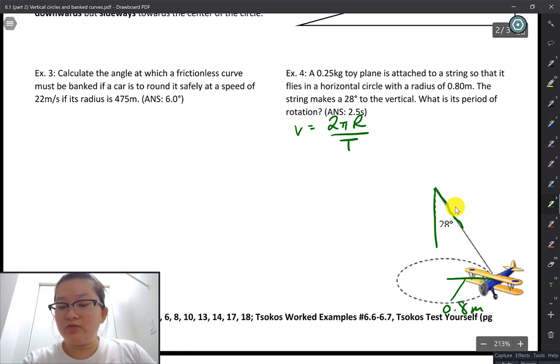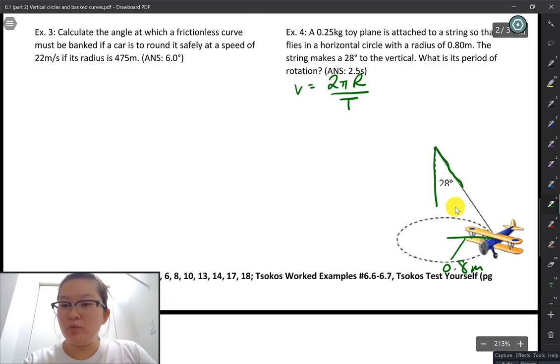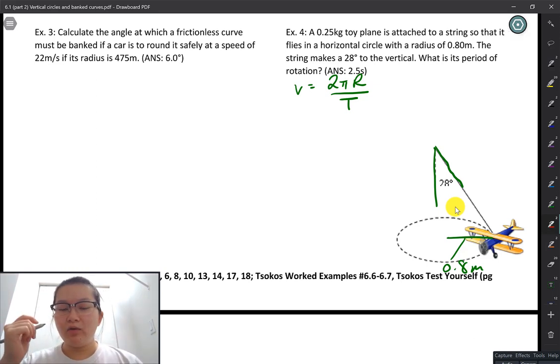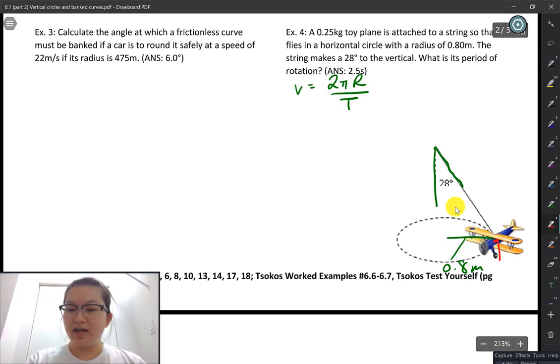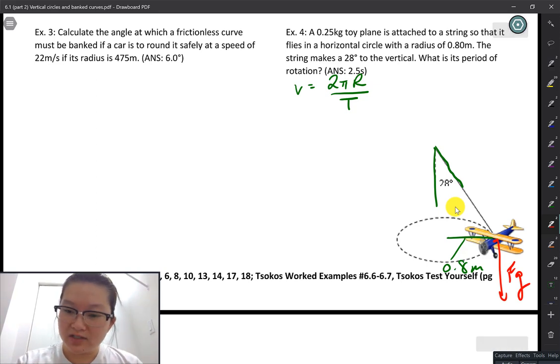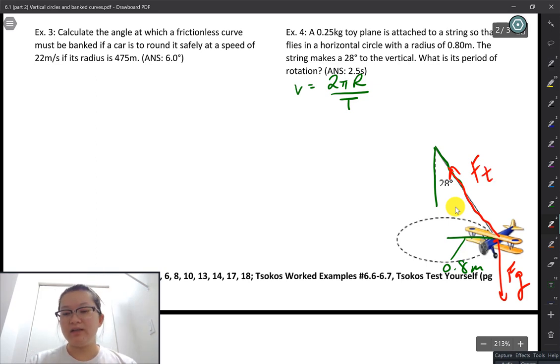So if we have to start off with this problem, we should start off with a free body diagram to see which forces actually will be helping, will be keeping the plane moving along in the circle. First, we know there is F_g, the force due to gravity acting on the plane. The other force is definitely along the string, which is the force of tension acting on the plane. There is no surface for the plane to touch, so no normal force, no friction, assuming no air resistance. So that's it.